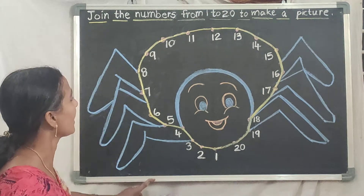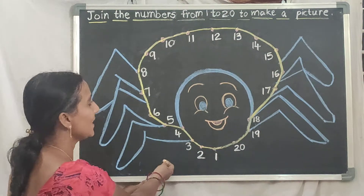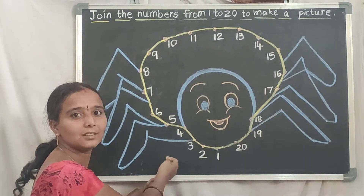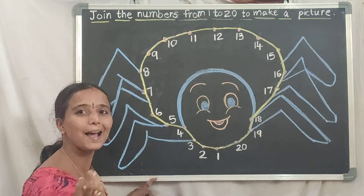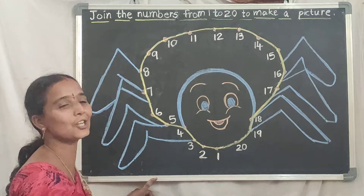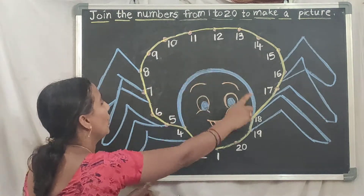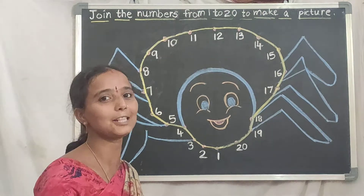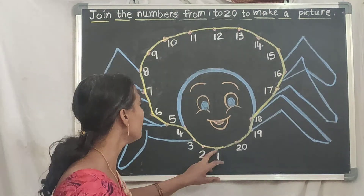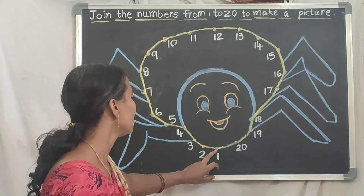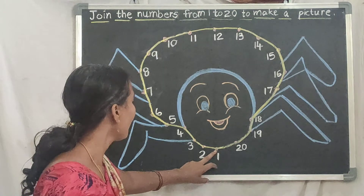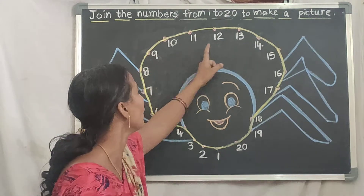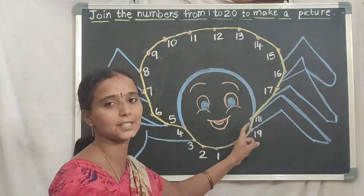Then come back up to one. Look here children — what is this? It is a spider! So after joining all the dots, we get the spider picture. All of you start from 1 and join all the dots using all the numbers up to twenty.